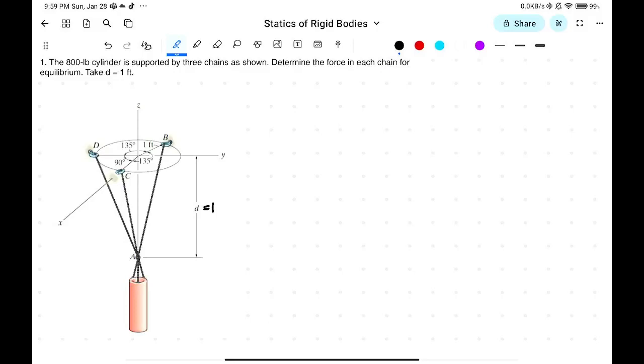Good day. Let's solve some problems from statics of rigid bodies. This is equilibrium in concurrent forces. The 800-pound cylinder is supported by three chains as shown. Determine the force in each chain for equilibrium. Take D is equal to 1 foot.